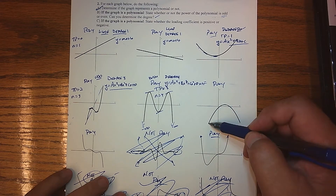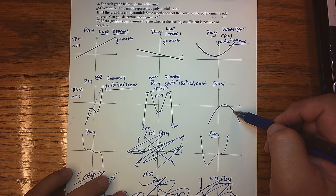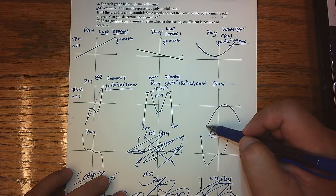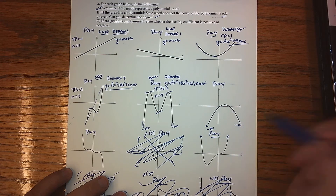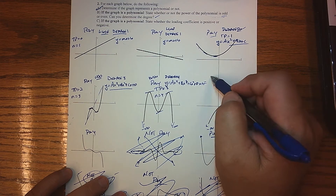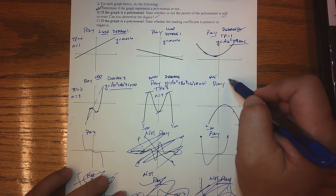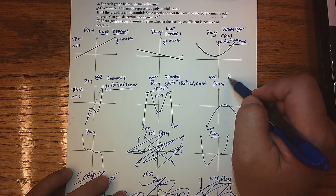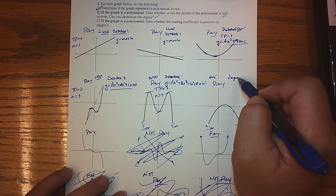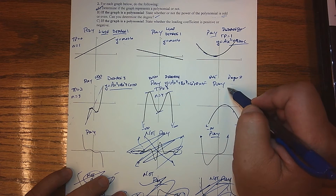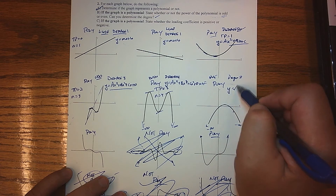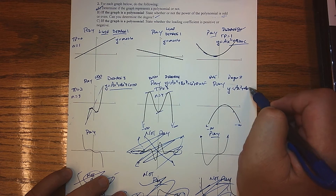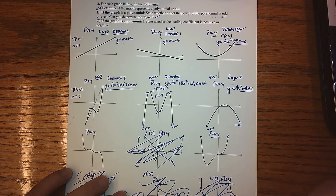The next one is definitely quadratic — it's pointing downwards. The end behavior is the same in both directions, so we know we're even, and our previous studies tell us that this is degree two. So this is some ax squared plus bx plus c.